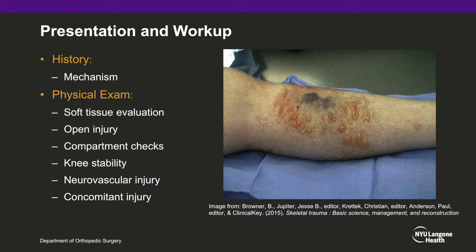The workup of this injury starts with a detailed history and physical to determine the mechanism of injury. A thorough soft tissue evaluation should be performed to evaluate for any open injuries or possible compartment syndrome. Knee stability and neurovascular status should also be carefully documented and a secondary exam should be performed to rule out other injuries. In higher energy injuries, suspicion for vascular damage is increased and evaluators should consider obtaining an ankle brachial index and a vascular consult if there is concern. These patients should also be admitted and monitored for possible compartment syndrome, as it can develop within the first 24 to 36 hours due to a reperfusion injury.